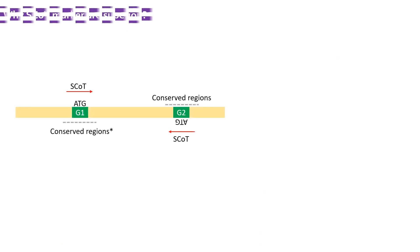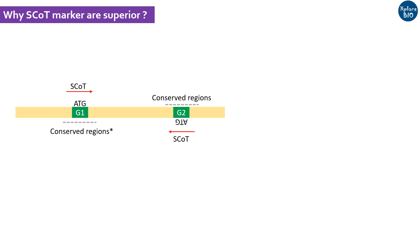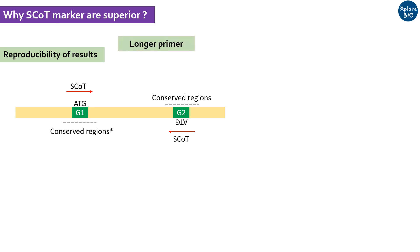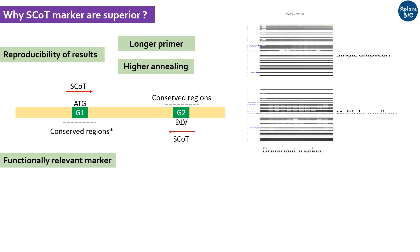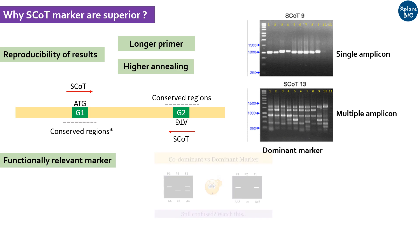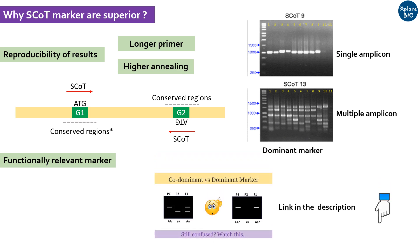Compared to RAPD markers, which suffer the major issue of reproducibility, SCoT markers are highly reproducible. There are two major reasons for this: first, these primers are 18 bases long, which is significantly longer compared to RAPD primers; and secondly, the annealing temperature of primers is 50 degrees. Additionally, these markers are designed from start codon flanking regions of genes and hence may be of functional relevance. SCoT markers may produce single or multiple amplicons and are usually dominant in nature.